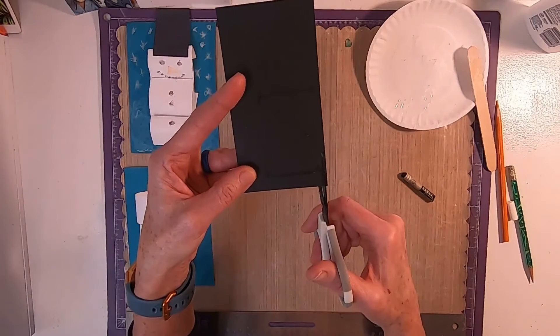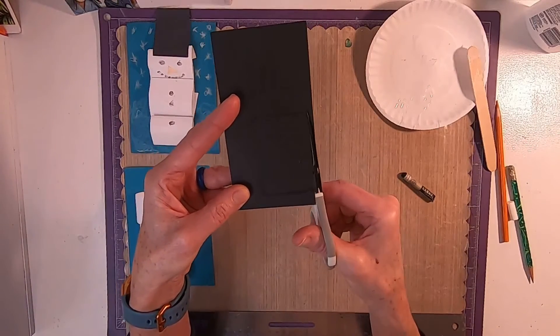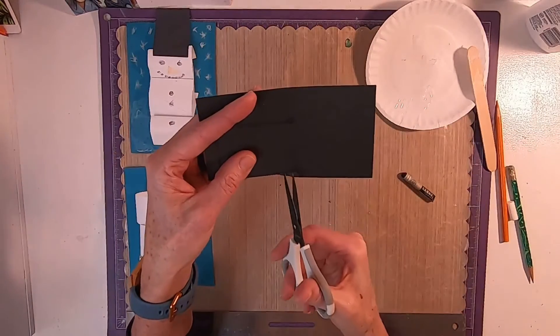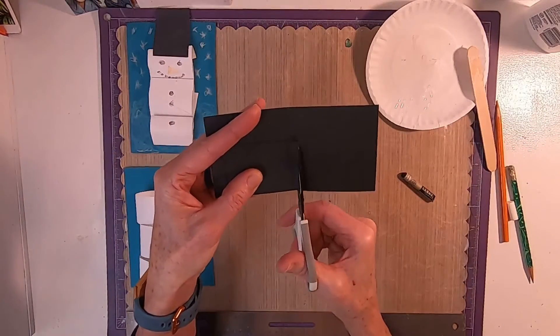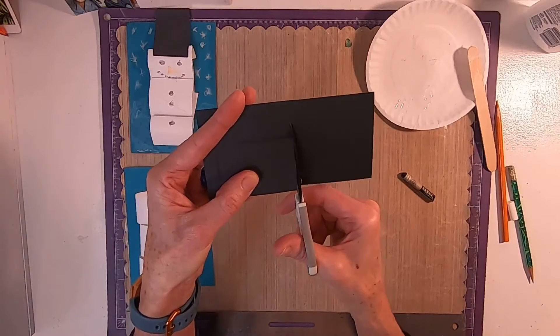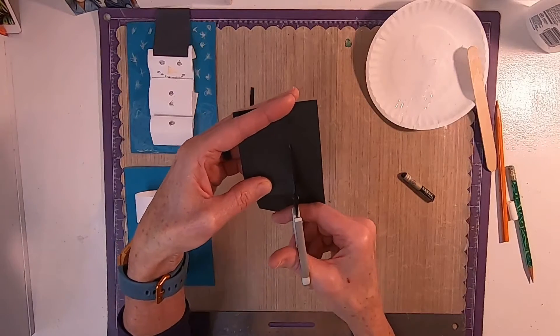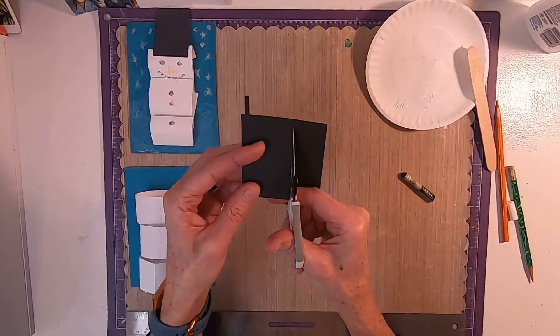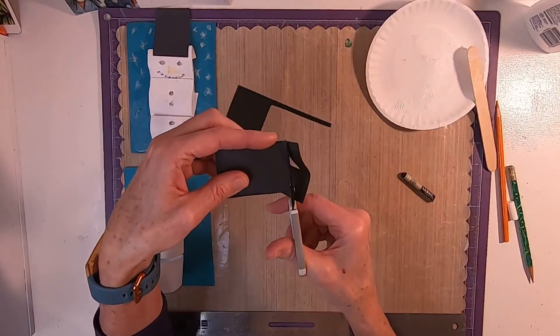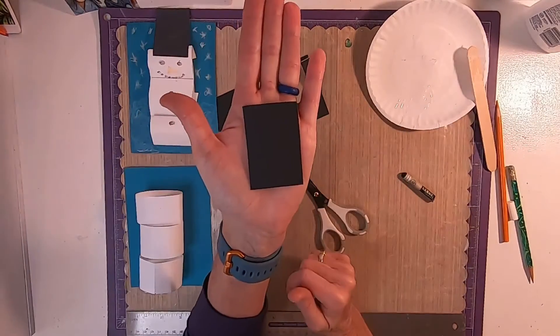I'm going to start over here cutting away from me. Then turn my paper so I can cut away from me. You can cut a little past your dot so you can turn your paper and cut down the line. Cutting away from you. And there's my rectangle.